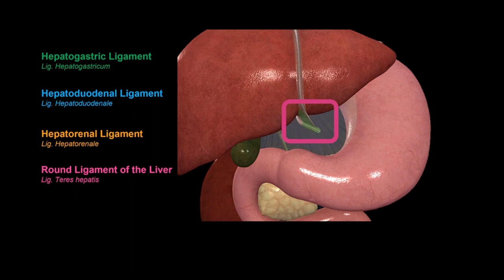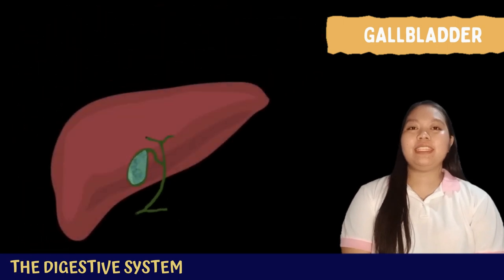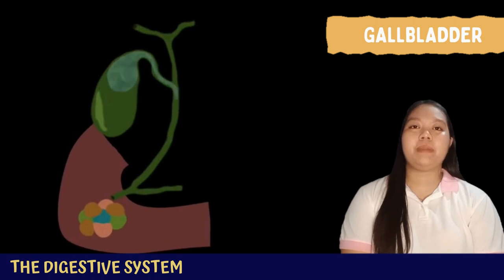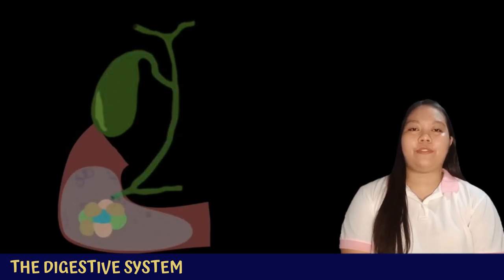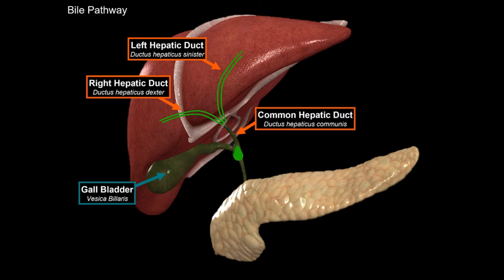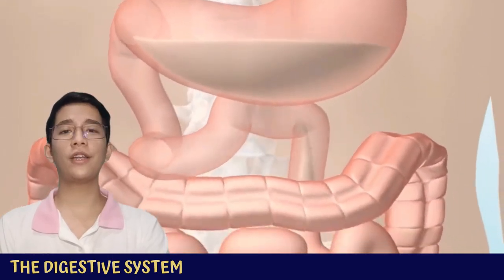The gallbladder is a pear-shaped organ that stores, concentrates, and transports bile into the duodenum of the small intestine via the common bile duct, assisting in breaking down fats for digestion. The gallbladder's duct system includes the common hepatic duct, formed by the right and left hepatic ducts; the cystic duct, which connects the neck of the gallbladder to the common hepatic duct; and together the common hepatic duct and cystic duct form the common bile duct.